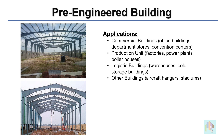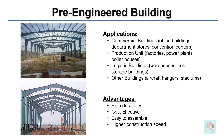Pre-engineered buildings are the most common type of steel building used in the industry and widely used for commercial structures like large warehouses, factory sheds, or office buildings. There are several advantages of a PEB structure over conventional steel buildings, such as high durability, lightweight, more cost-effective, and it also provides a flexible solution and higher construction speed, for which pre-engineered buildings are now more popular in the construction industry.